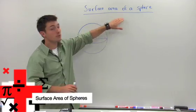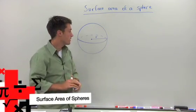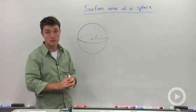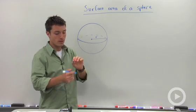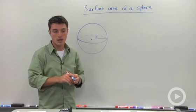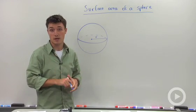When we're talking about the surface area of a sphere, you can think of it as how much paint would you need to cover a tennis ball, or if you looked at a baseball and you took all the stitching apart, how much leather would you need to make that ball?